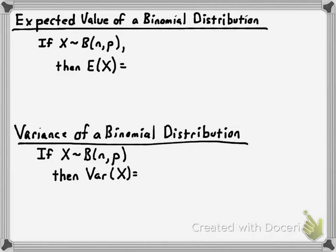For example, if you expect 75% of the time you would have success for whatever random variable you're talking about, and there are 100 trials, your expected number of successes would be 75. To find the expected value in a binomial distribution, all you have to do is take the probability of success and multiply it by the number of trials. So n times p gives you the expected or mean value of a binomial distribution.